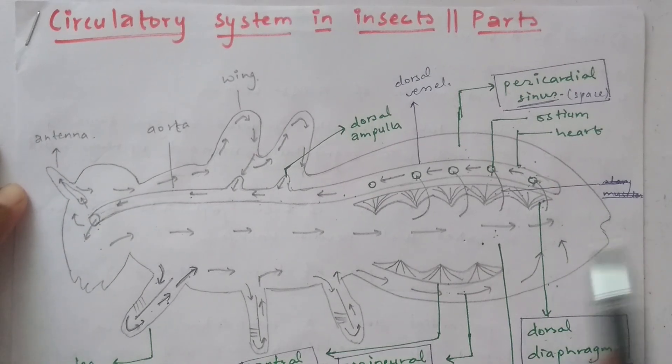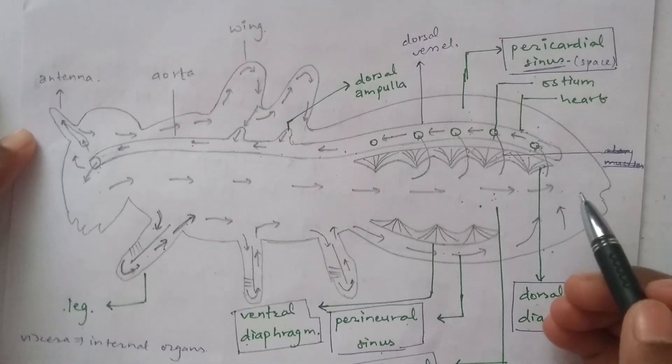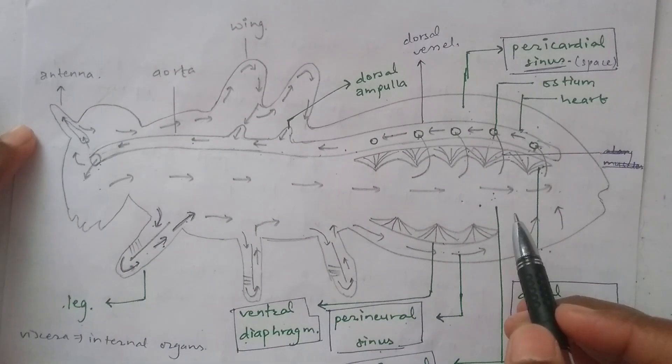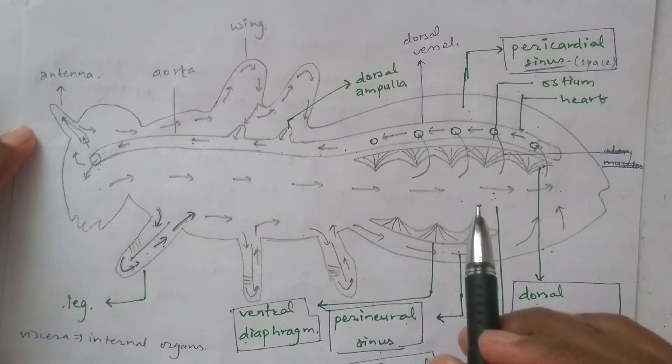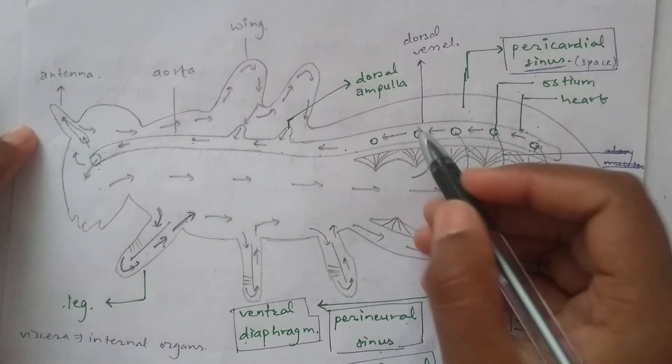The circulatory system in insects. This is the first diagram of the circulatory system in insects. When we look at this diagram, we will examine the different components.